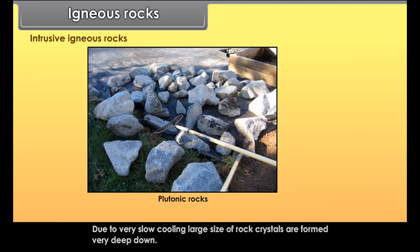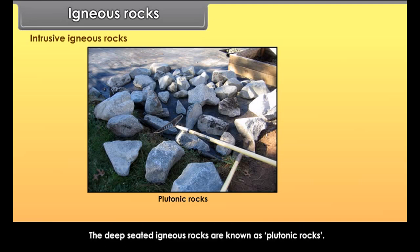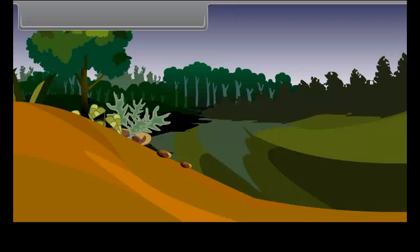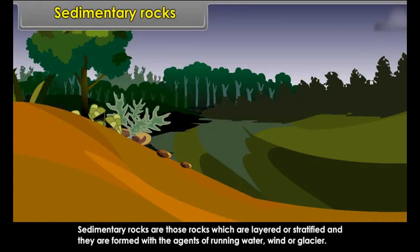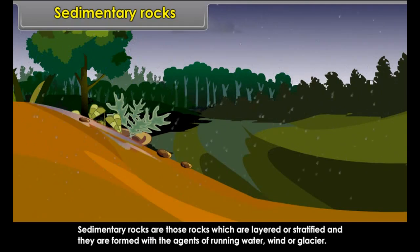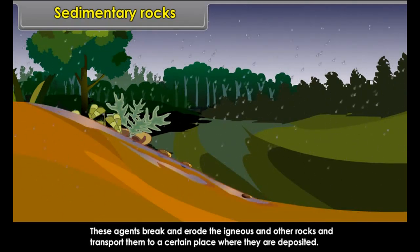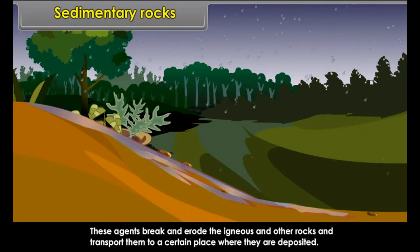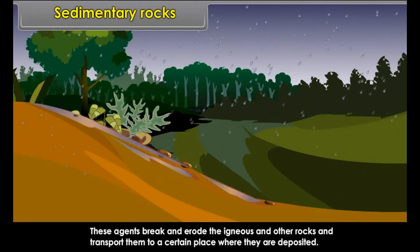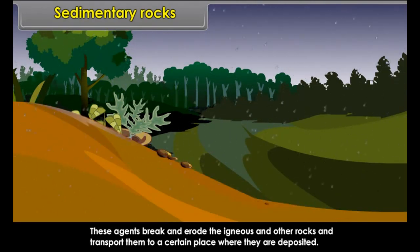Intrusive igneous rocks. Intrusive rocks are formed by the solidification of magma below the surface of the Earth in cracks or joints. Inside the Earth, magma cools very slowly and thus forms crystals of large size. Granite and dolerite are the most common examples of this type of rock.